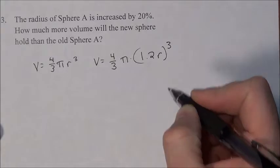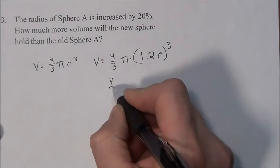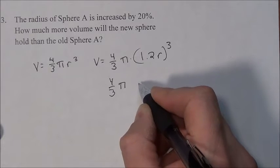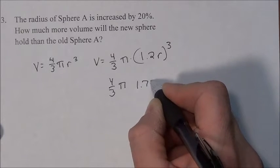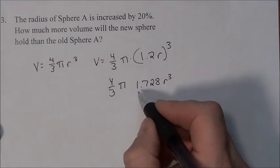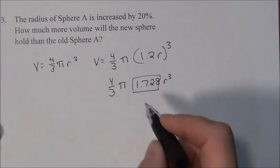That whole thing, as always, gets cubed. So we have 4 thirds pi, 1.2 times 1.2 times 1.2 is 1.728, I believe, r cubed. So it's going to get this much larger.